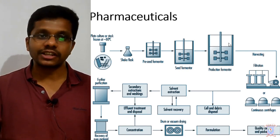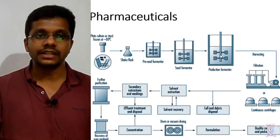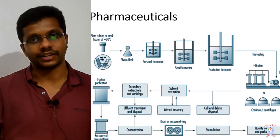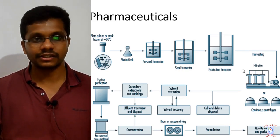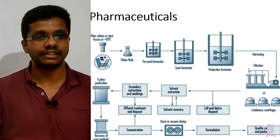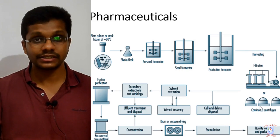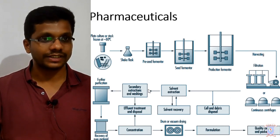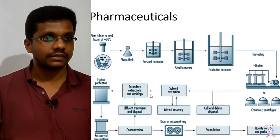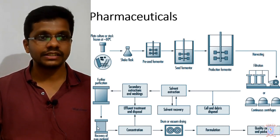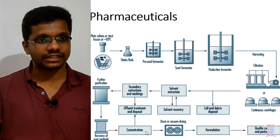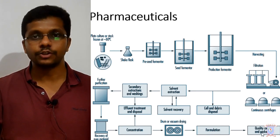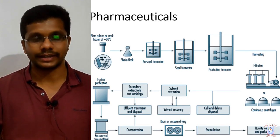If we are producing a secondary metabolite like penicillin, the penicillin production actually occurs during this production fermentation. After the fermentation it goes for isolation and purification — in this case using methods like filtration and centrifugation, then solvent extraction, then purification, then concentration, drying, and formulation, and finally packaging and quality control.